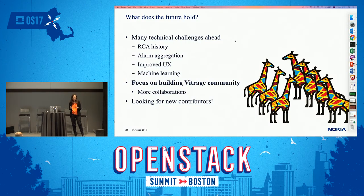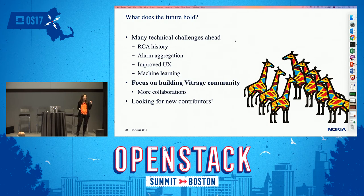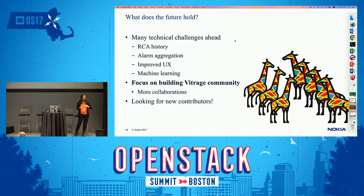We have many future plans. All the basic functionality is in place, but we have a lot more to add. One very interesting item is root cause analysis history: if I see an application failure that is a result of a problem on the host from yesterday, and the problem on the host is already solved but the application has not recovered, we want Vitrage to show that the root cause is no longer active. We also want alarm aggregation — in the Vitrage UI, show only the root cause and let you click to drill down to related alarms.